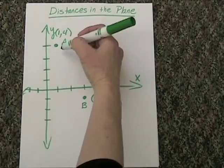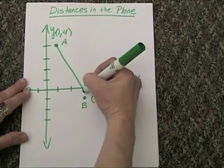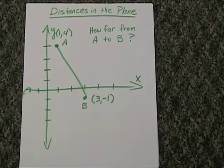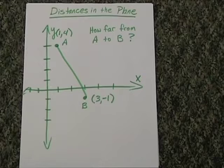Now the question is, how far is it from A to B? This is a diagonal segment, so we're going to have to use a Pythagorean theorem application.